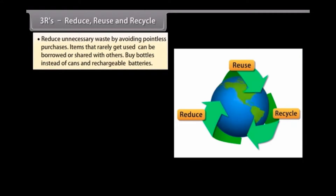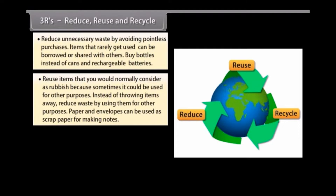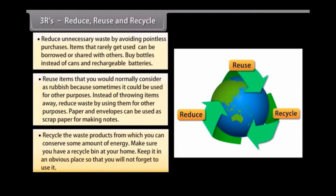The three R's are reduce, reuse, and recycle. Reduce unnecessary waste by avoiding pointless purchases — items rarely used can be borrowed or shared with others; buy bottles instead of cans and use rechargeable batteries. Reuse items that you would normally consider as rubbish, since they could often be used for other purposes; for example, paper and envelopes can be used as scrap paper for making notes. Recycle waste products to conserve energy — make sure you have a recycle bin at home and keep it in an obvious place so you will not forget to use it.